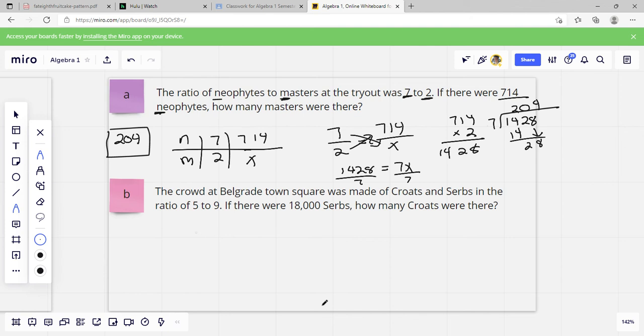Next one says, the crowd at Belgrade Town Square was made of Croats and Serbs in the ratio of 5 to 9. If there were 18,000 Serbs, how many Croats were there? So we're going to have Croats, Serbs, and the ratio is 5 to 9. And we've got 18,000 Serbs. That's our S. So our X goes up there. So we're going to say 5 to 9 equals X over 18,000.